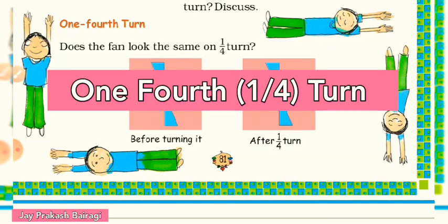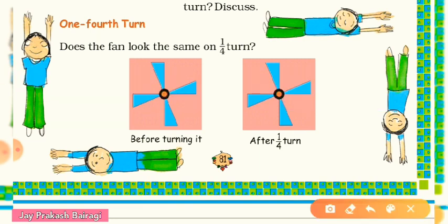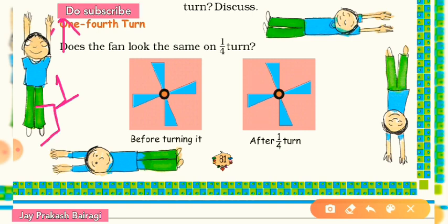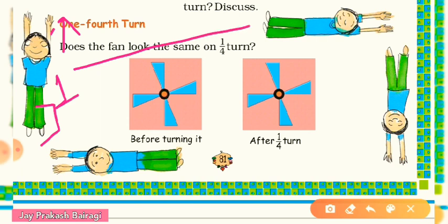Let's understand one fourth turn through a picture. Here is a boy in the first picture in a standing position — legs are downside and hands are upside. What will happen in one fourth turn? If you take a right turn by one fourth, you will get a sleeping position. This is known as one fourth turn.